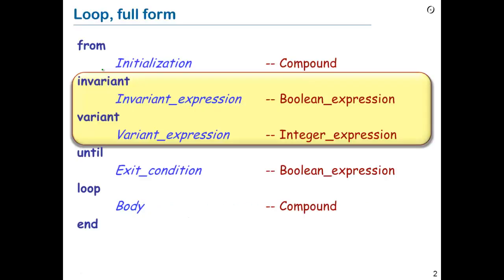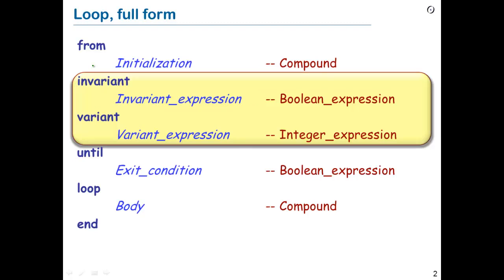We start by looking again at the structure of loops. We saw in the last lecture that in order to determine the correctness of a loop, we need an invariant clause. However, this only gives us correctness if the loop terminates. We have said nothing about termination so far. So we must also, as a complementary technique, use a variant, which is going to be the guarantee that the loop terminates. The variant clause introduces a variant expression.